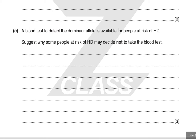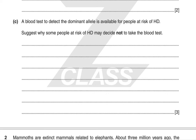A blood test to detect the dominant allele is available for people at risk of HD. Suggest why some people at risk may decide not to take the blood test. There are many reasons. One is that symptoms normally appear after people have already had children, so by the time they figure out they have HD, they have probably already passed it on. Since there is no real cure for HD, it might not be in their interest to take the test anyway. Other reasons include the cost of the test, fear that results will affect other family members, or just fear of a positive result in general.